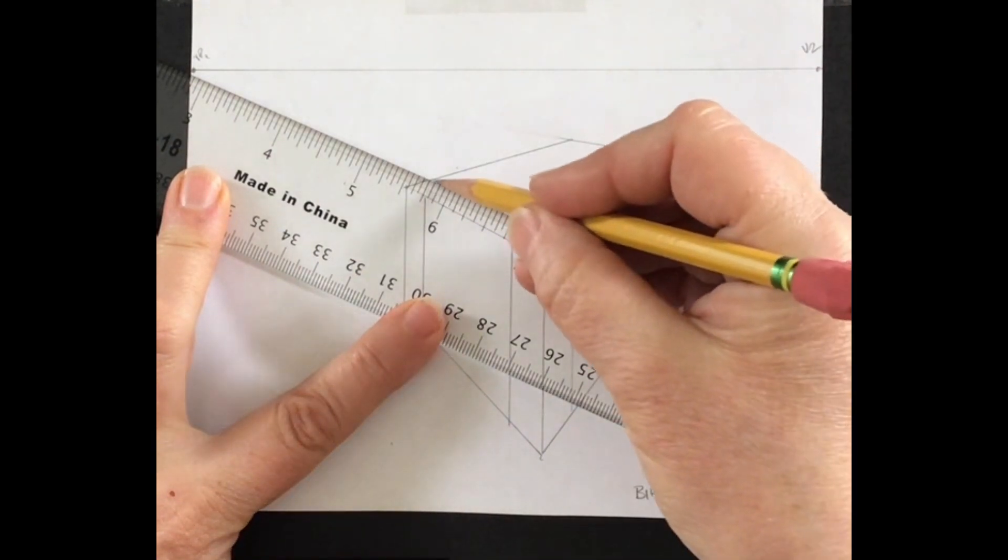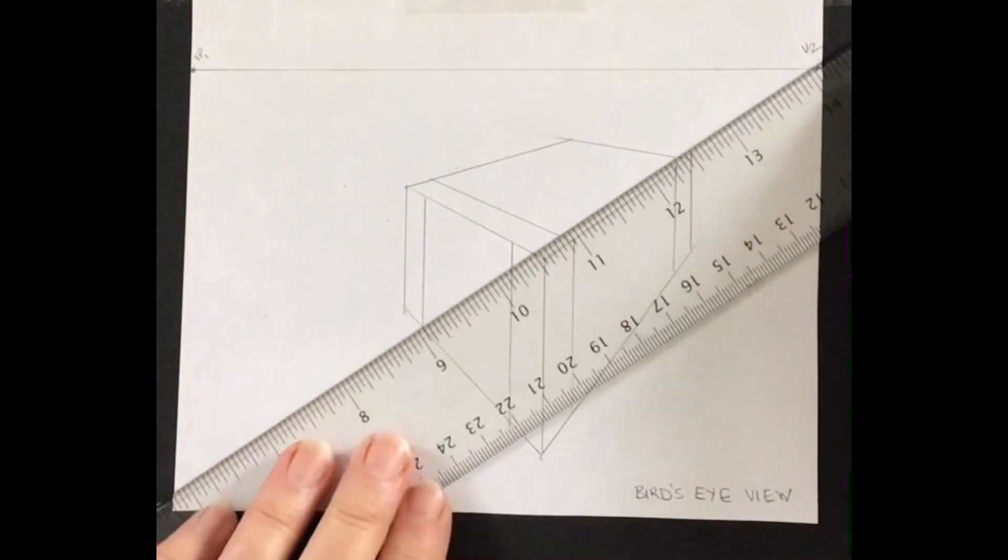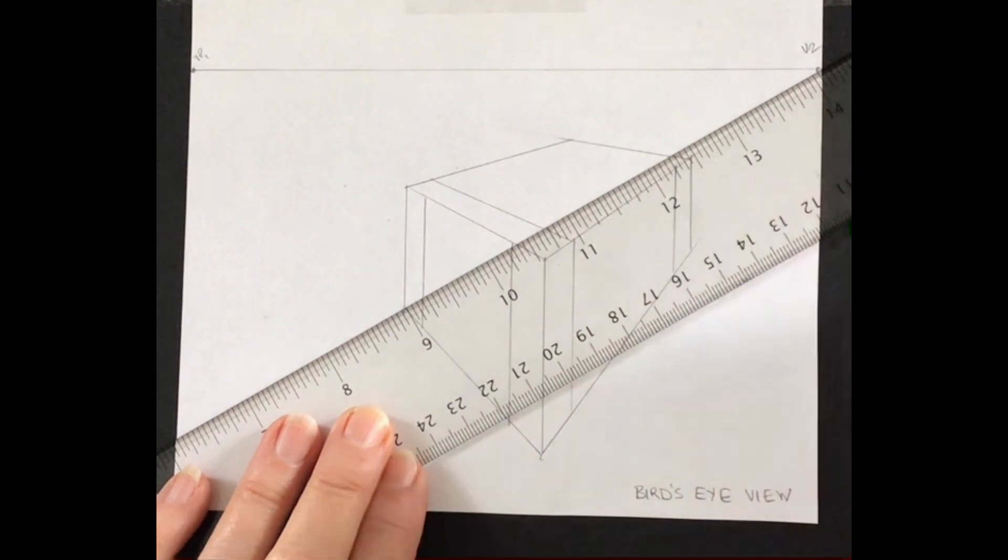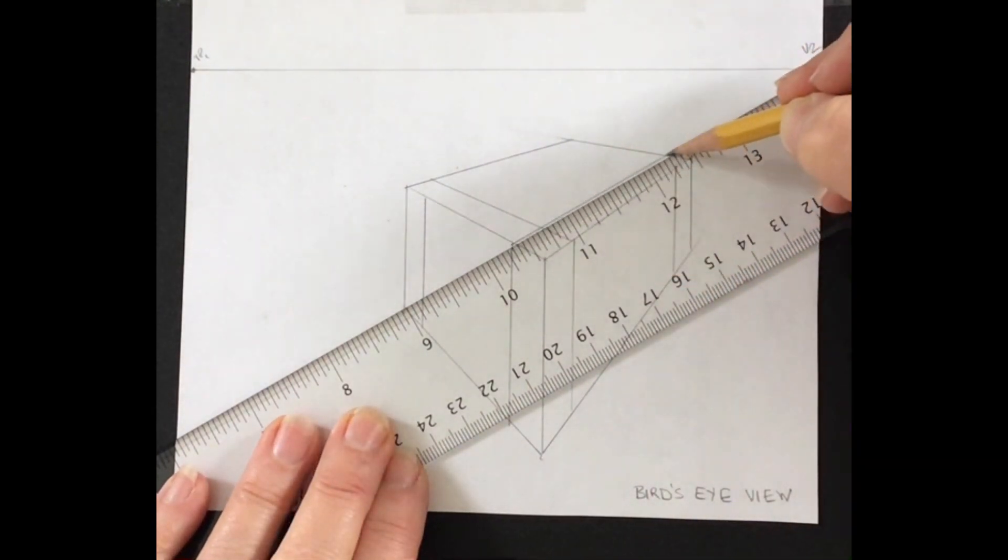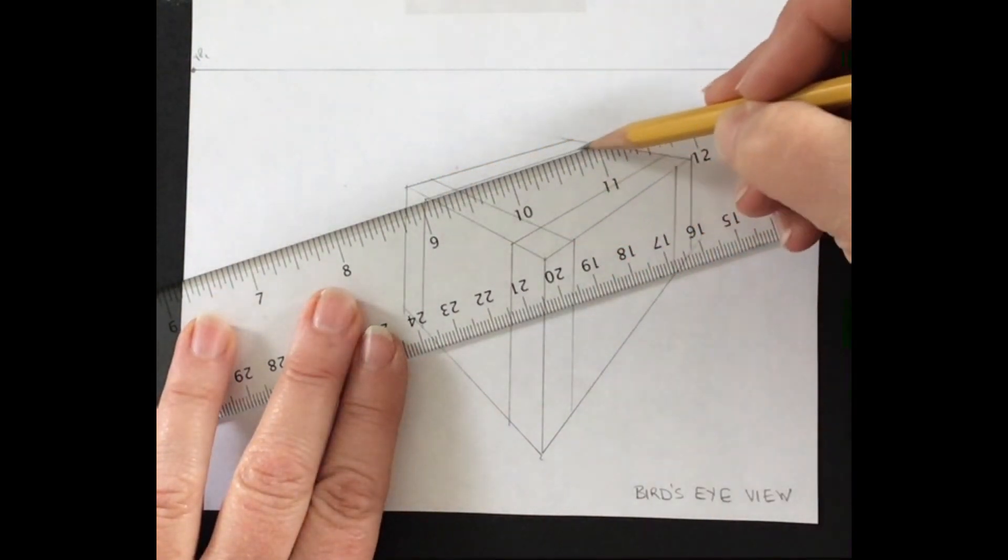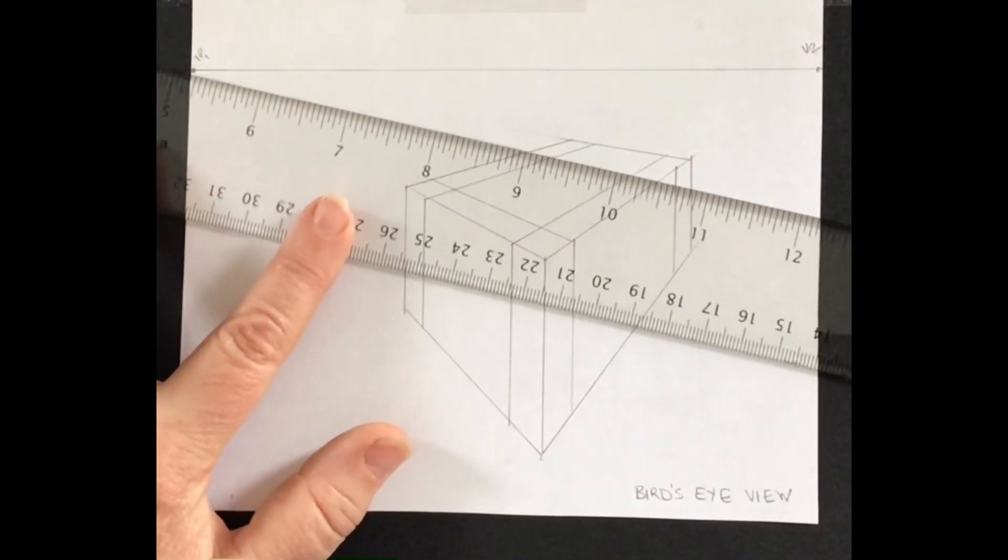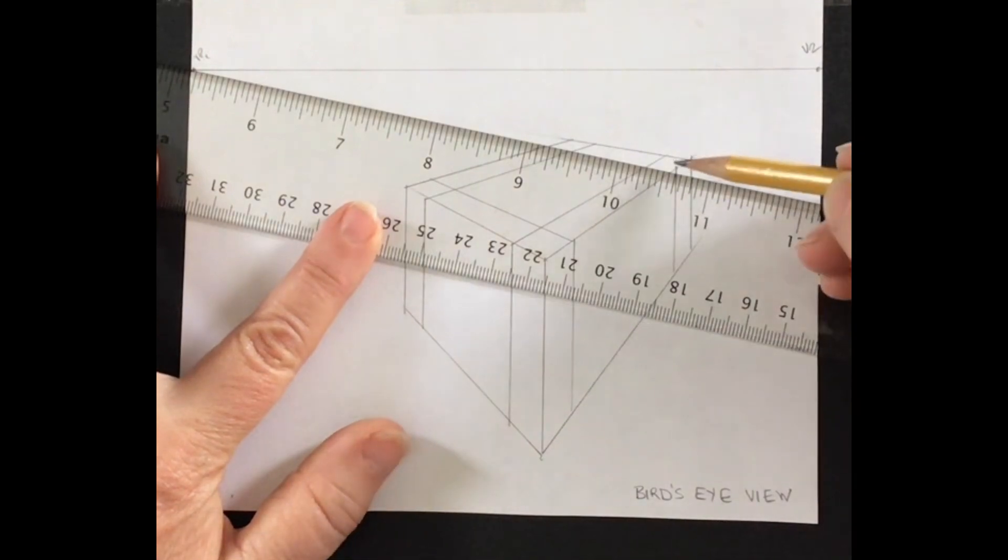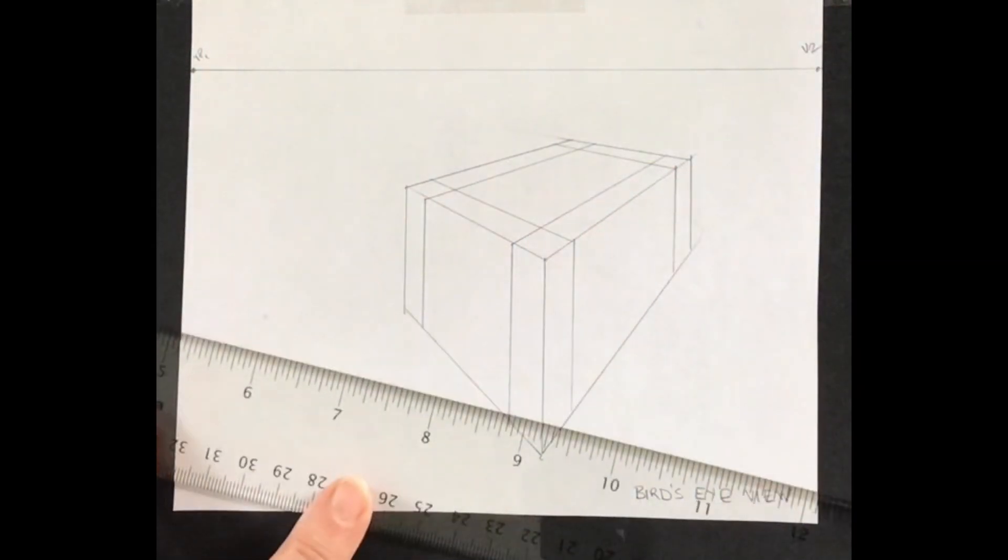So I'm going to go ahead and draw my line there. And here I'm lining this up. Great. Then I'm going to line this up. It's going to look soon like a Rubik's Cube almost. And here. Fantastic.